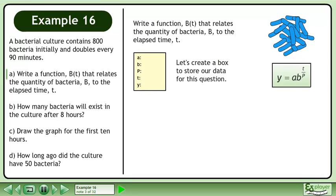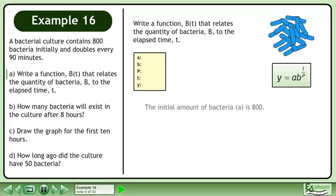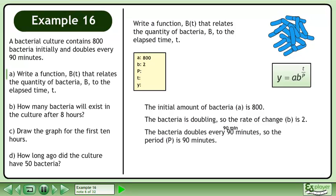Let's create a box to store our data for this question. The initial amount of bacteria is 800. The bacteria is doubling, so the rate of change is 2. The bacteria doubles every 90 minutes, so the period is 90 minutes.